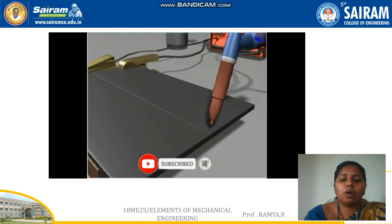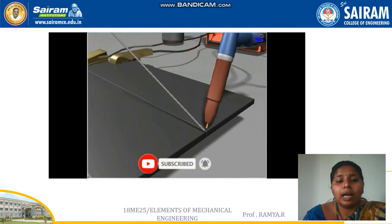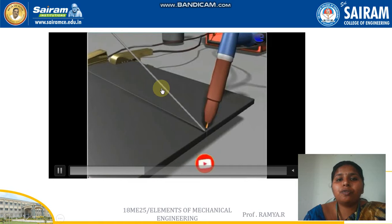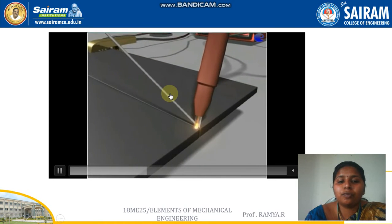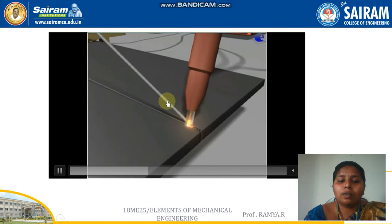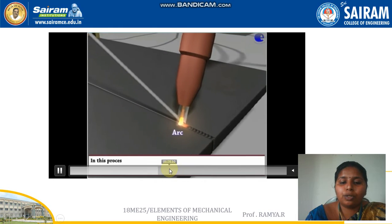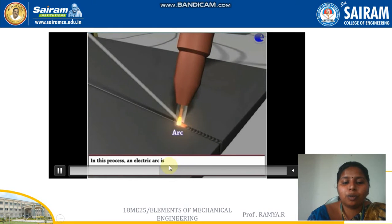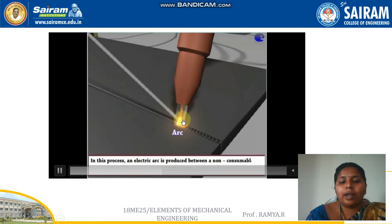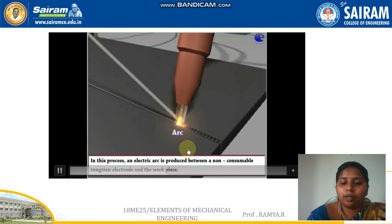Since TIG welding makes use of a non-consumable electrode, an additional filler rod is used along with the electrode. When the filler rod is moved against the arc, an arc is set between the electrode and the workpiece.